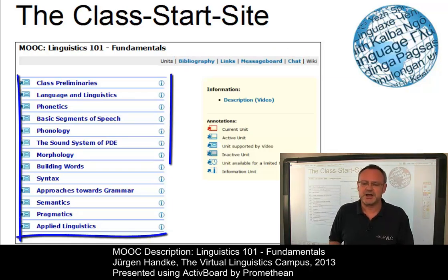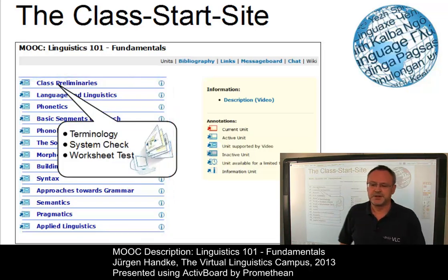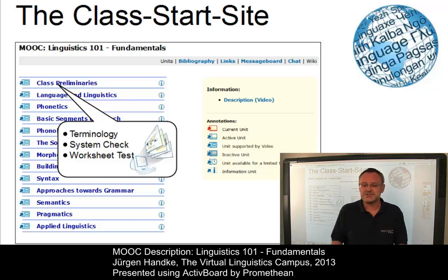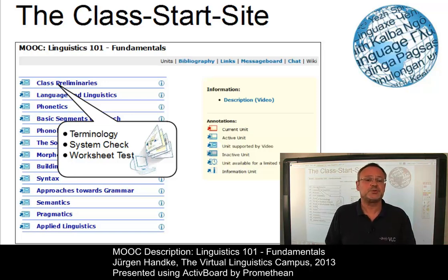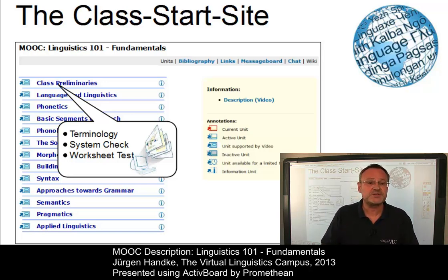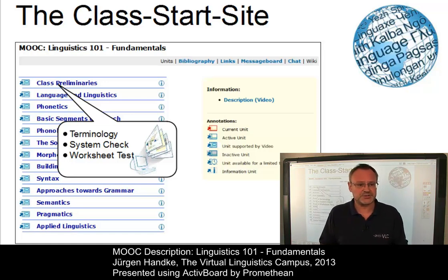The core of the class are the 13 units, where the first one, the class preliminaries, informs you on a few introductory pages that are all video-supported about some general aspects of the class and discusses what it means to study online on the virtual linguistics campus. In addition to this, you will find helpful routines that find out whether your computer is configured correctly and whether the submission of worksheets is successful. For this reason, we recommend going through the class preliminaries very carefully, especially if you are a first-time user of a class on the virtual linguistics campus.